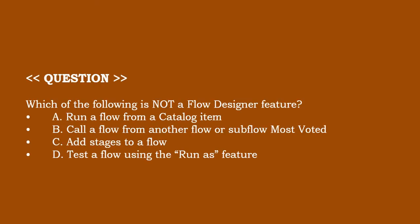Next one. Which of the following is NOT a flow designer feature? Option A: run a flow from a catalog item. Option B: call a flow from another flow or subflow, most voted. Option C: add stages to a flow. Option D: test a flow using the 'run as' feature. The correct answer is option B.